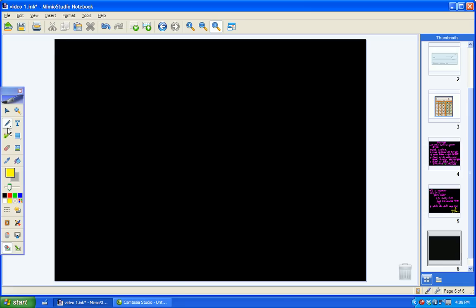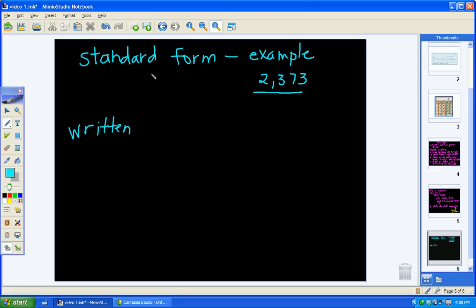There are three forms that we use when we're discussing place value. Our first form is called the standard form. It's the normal way we write numbers. So, an example would be if I said 2373. That is standard form. Standard form is the form we see most everywhere when we look around our dates and our ages and all that kind of stuff.